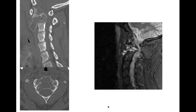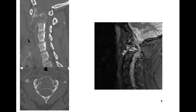Moving on to expansile lytic lesions of the spine and vertebral bodies — not ivory in this case. Here we see an expansile lytic lesion involving the dens, shown on axial imaging with a narrow zone of transition, no periosteal reaction, and thinned cortex. On MR, there are fluid-fluid levels. This was an aneurysmal bone cyst. It's not uncommon for ABCs to occur within the spine, vertebral body, or posterior elements — a good location, especially in a younger patient.